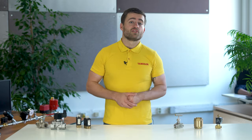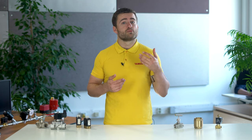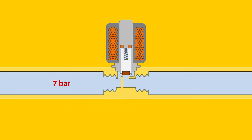If the valve is in a closed system, the pressure drop is a bit more difficult to calculate. You can do this as follows: you measure the pressure in the pipe before the valve and after the valve. The pressure before the valve minus the pressure after the valve is then the pressure drop.